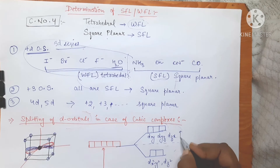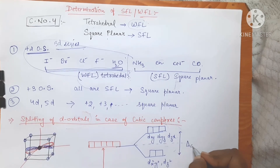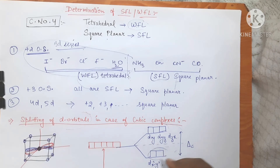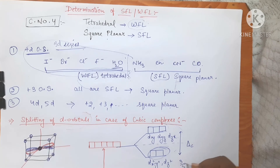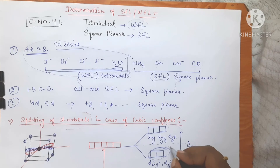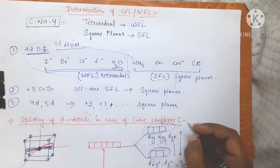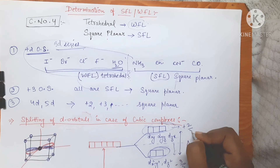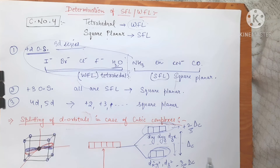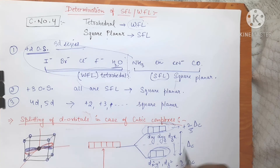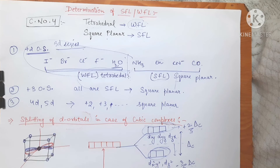If this splitting energy is ΔC, then the contribution to CFSC of each of the two on-axis orbitals (dx²−y² and dz²) is −3/5 ΔC, because there is a release of energy. For each of the three in-between-axis orbitals (dxy, dyz, dzx), it is +2/5 ΔC. Using the barycenter rule, −3/5 ΔC is the contribution of each of the two orbitals and +2/5 ΔC is the contribution of each of the three orbitals.